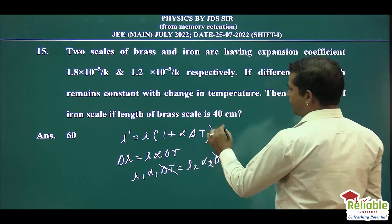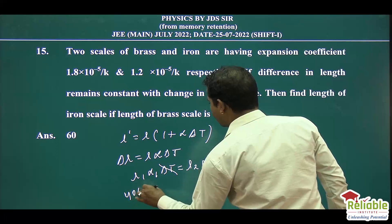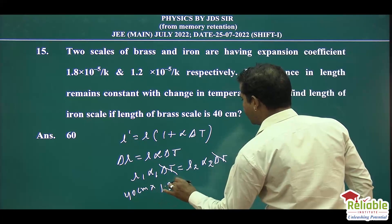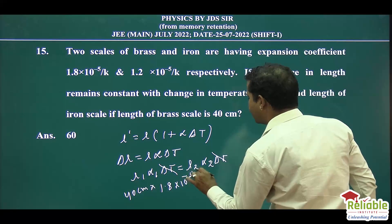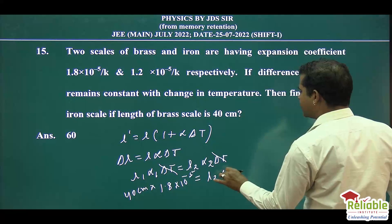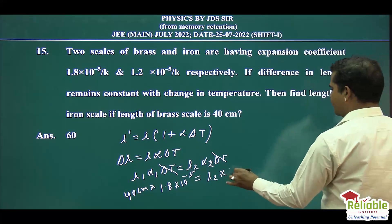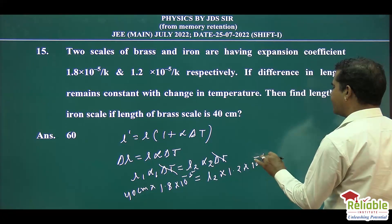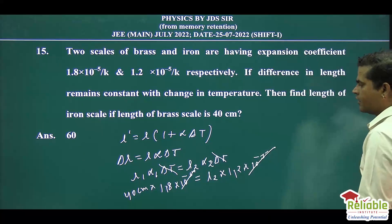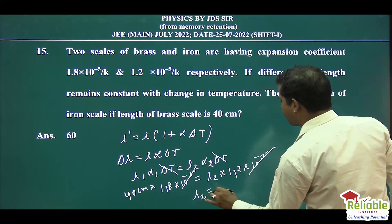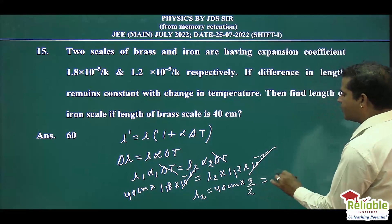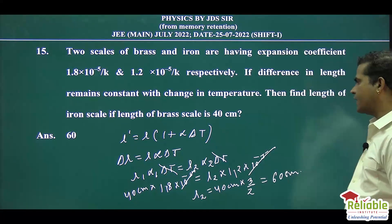So L1 is 40 cm with temperature coefficient 1.8×10⁻⁵. L2 is the length of the iron rod with coefficient 1.2×10⁻⁵. The powers of 10 cancel out. So L2 equals 40 cm multiplied by 1.8 divided by 1.2, which equals 40 cm times 3 by 2, and it is equal to 60 cm. The answer is 60 cm.